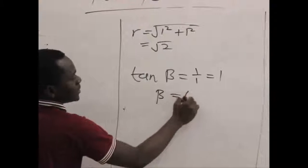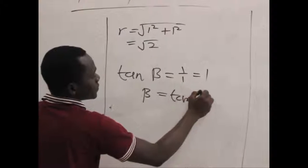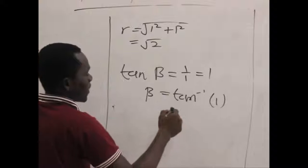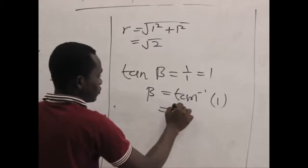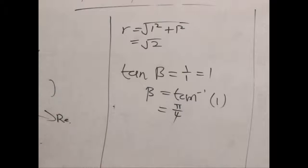So our beta becomes tan inverse of 1, which is equal to one-fourth pi when we calculate that.